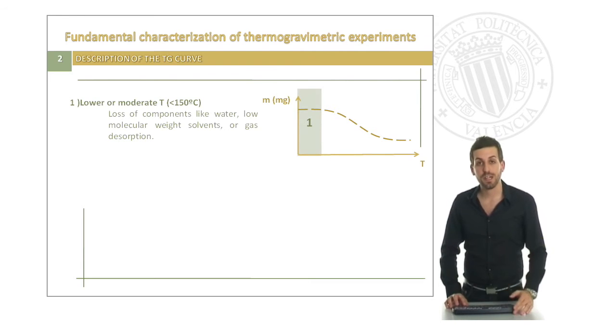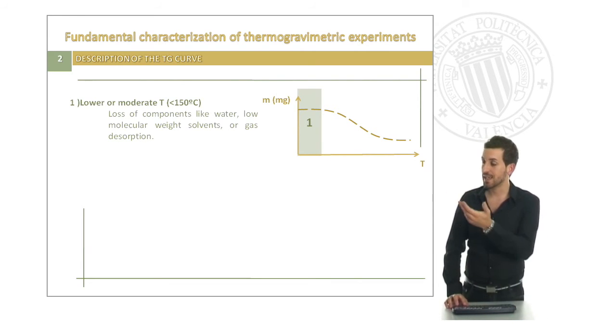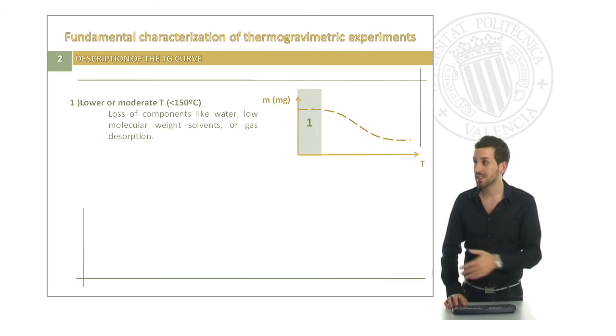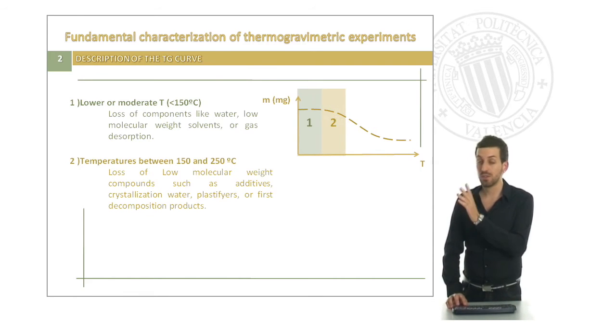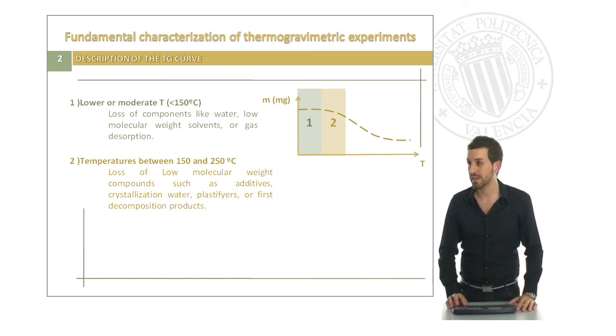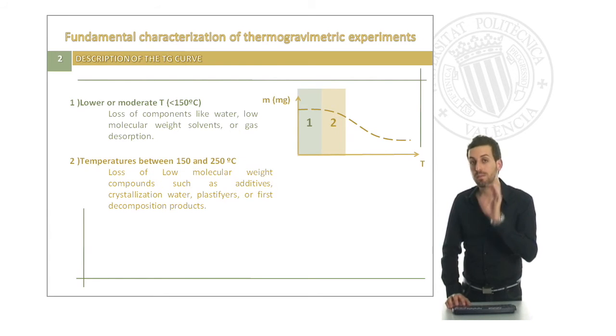In the increasing temperature axis, we can see as in the lower or moderate temperature range, so below 150 degrees, we will be able to see the loss of components like water, low molecular weight solvents or gas desorption. If we increase this temperature between 150 and 250 Celsius degrees, we will be able to see the loss of low molecular weight compounds such as different additives, crystallization water, plasticizers or first decomposition products of our polymer.